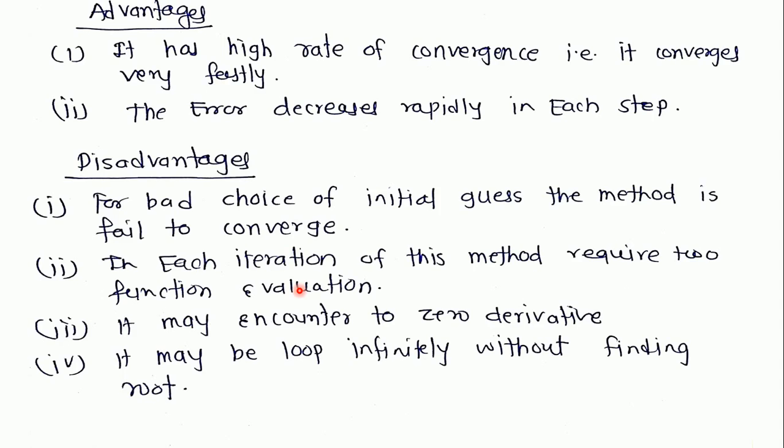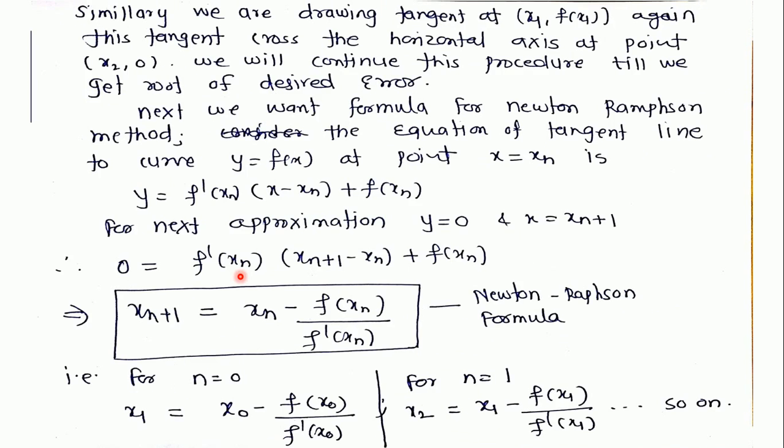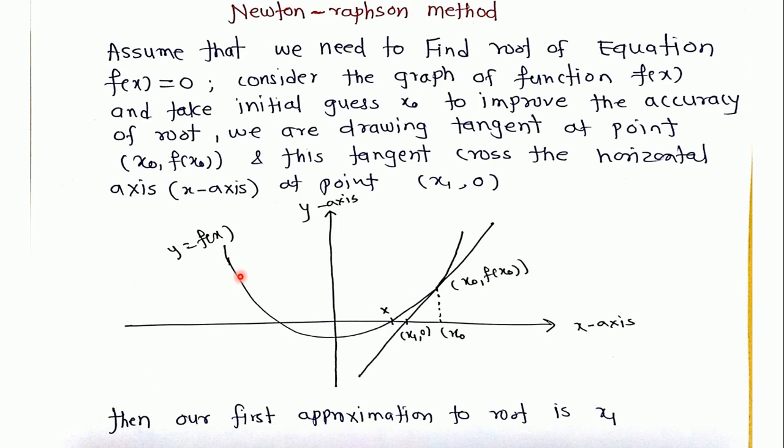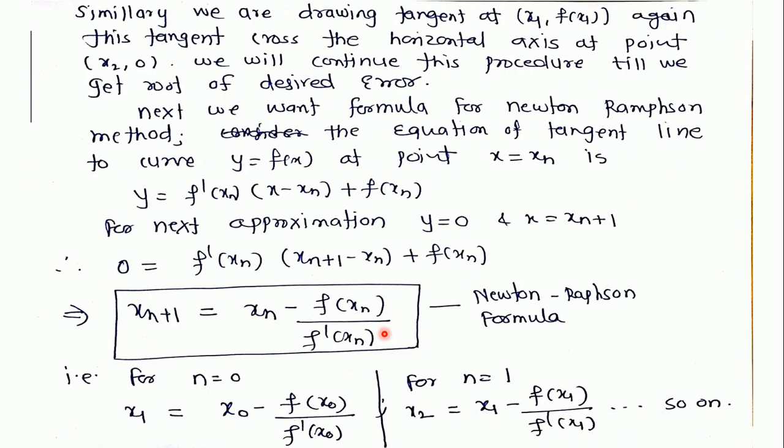For the bad choice of the initial guess the method fails to converge. See the graph of the function. If our choice of the guess is on this side then we are unable to draw the tangent and for this type of guess we are not able to get our required root.